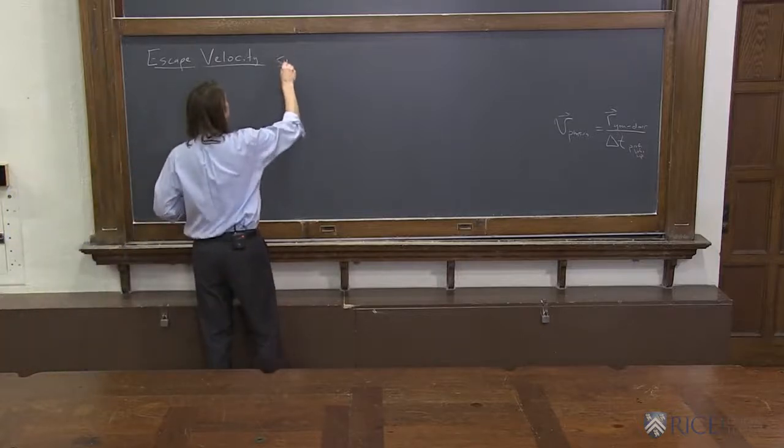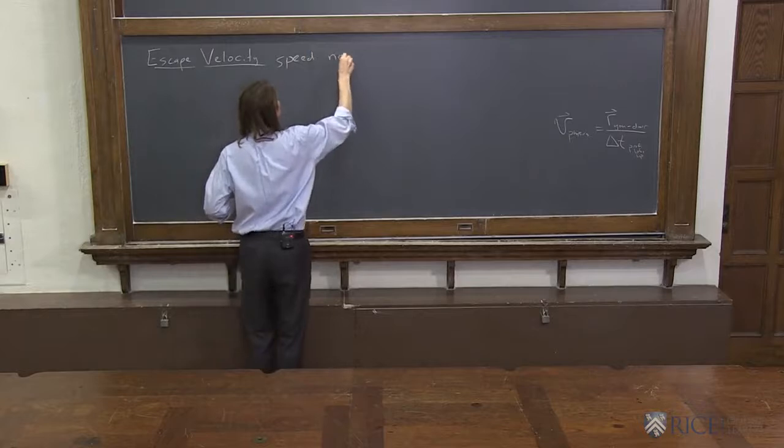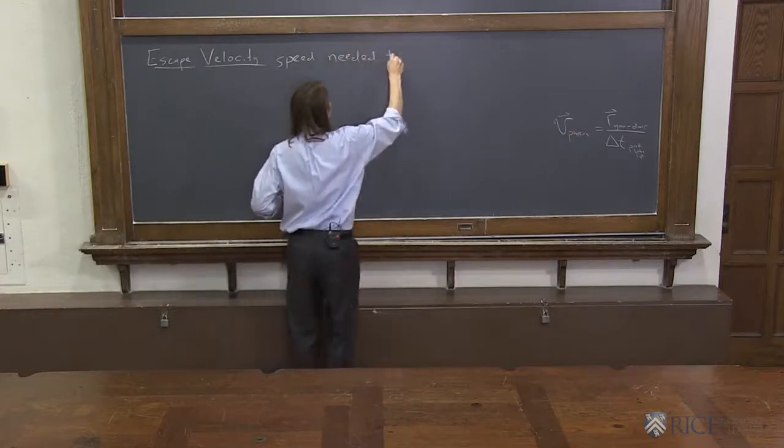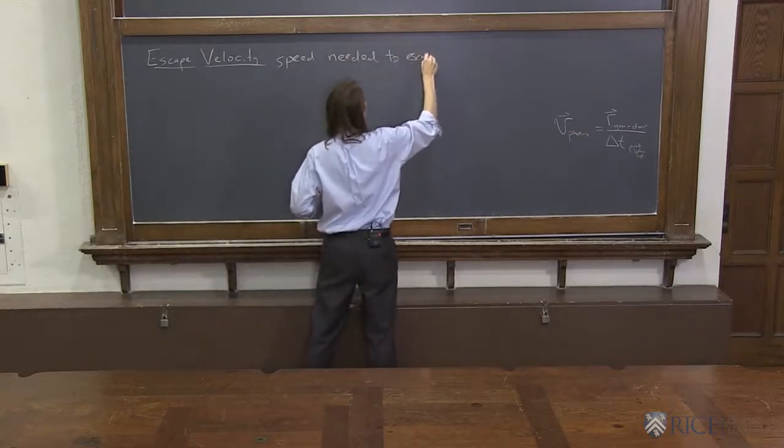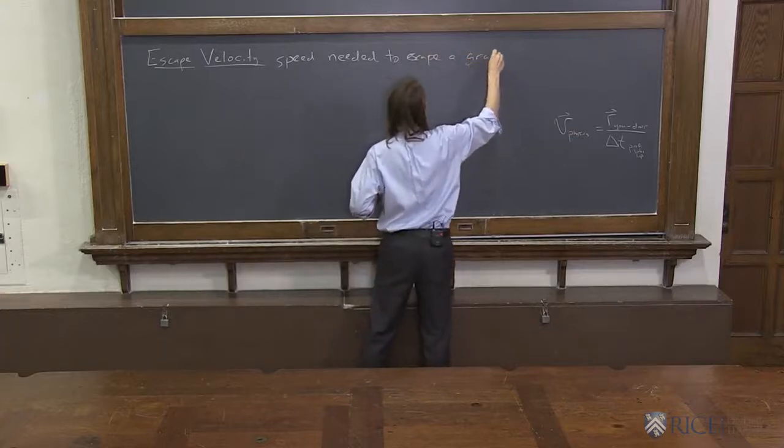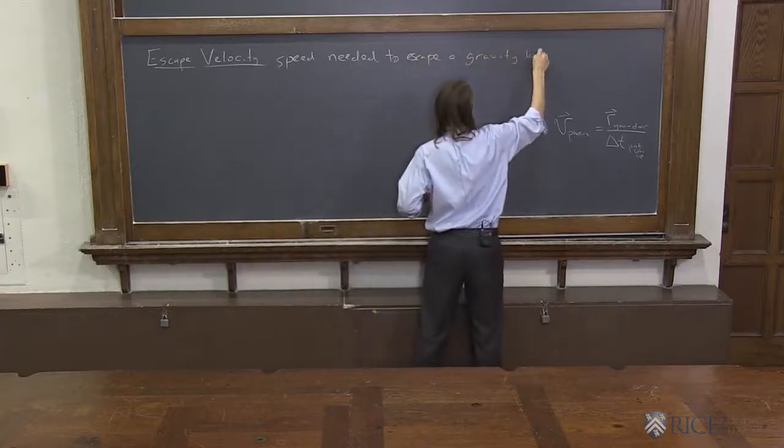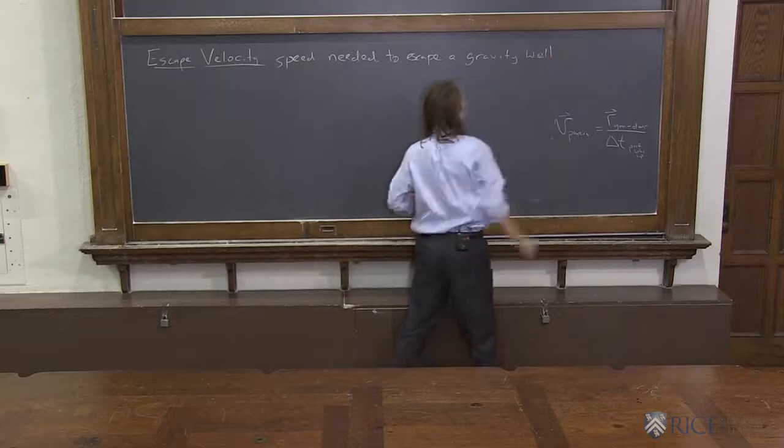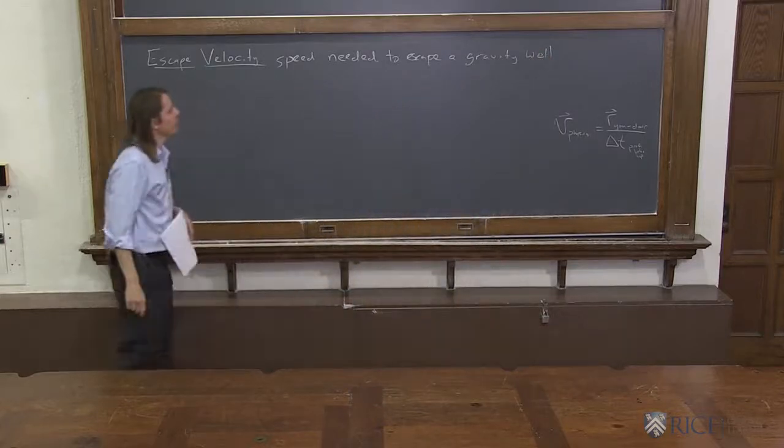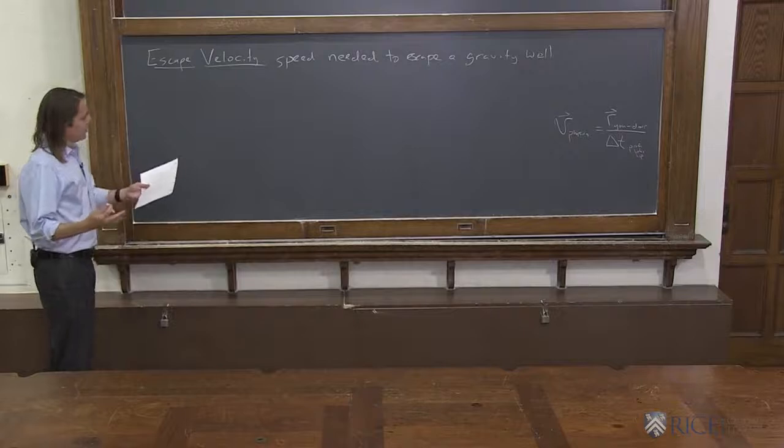We want the speed needed to escape a gravity well. We want off the earth, although we want more than that. So let's think of it this way. Here we go.